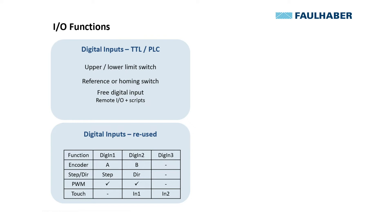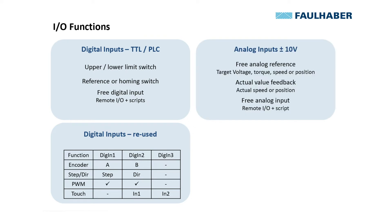The analog inputs can either be used — and that's what we're going to do here — as the target values for voltage, torque, speed, or position. Or you can even use them as the feedback value, for example connecting a potentiometer to be used as position feedback. Of course they can also be used in the basic scripts.